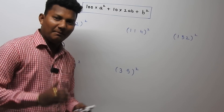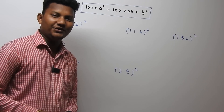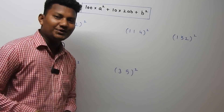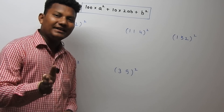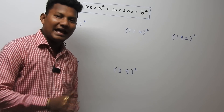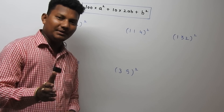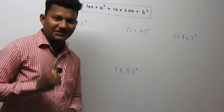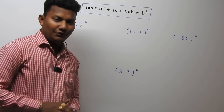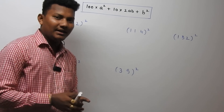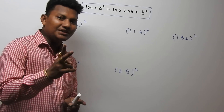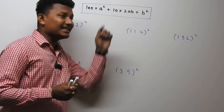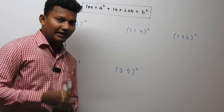Good morning everyone. I am back with some new intuitive tricks and techniques. Today we are going to see how to find the square of any 2-digit or 3-digit number in just 3 steps. We can find the square of any 2-digit or 3-digit number by using this formula.